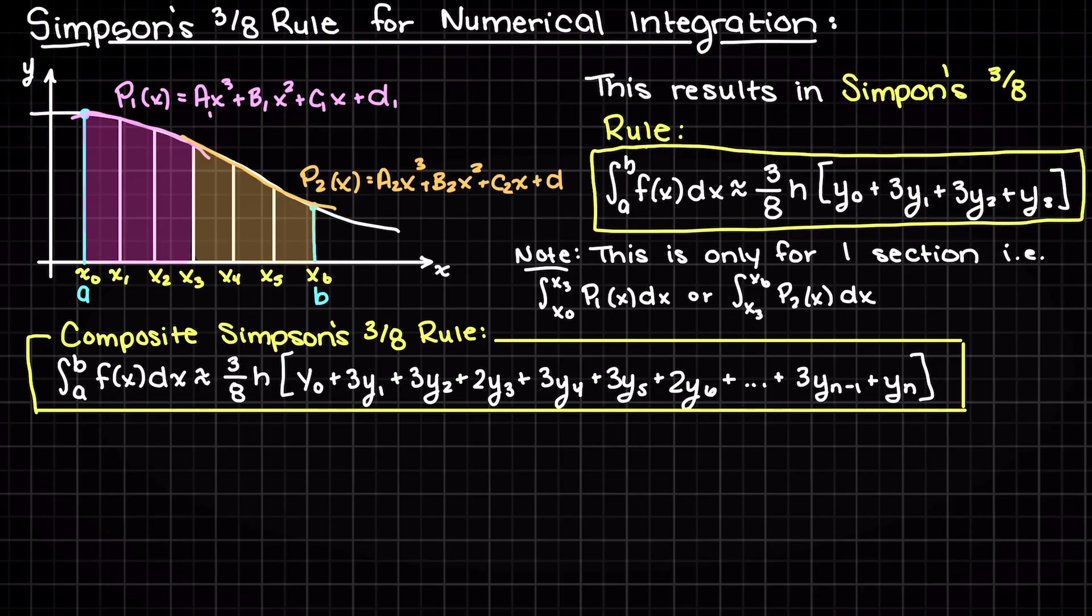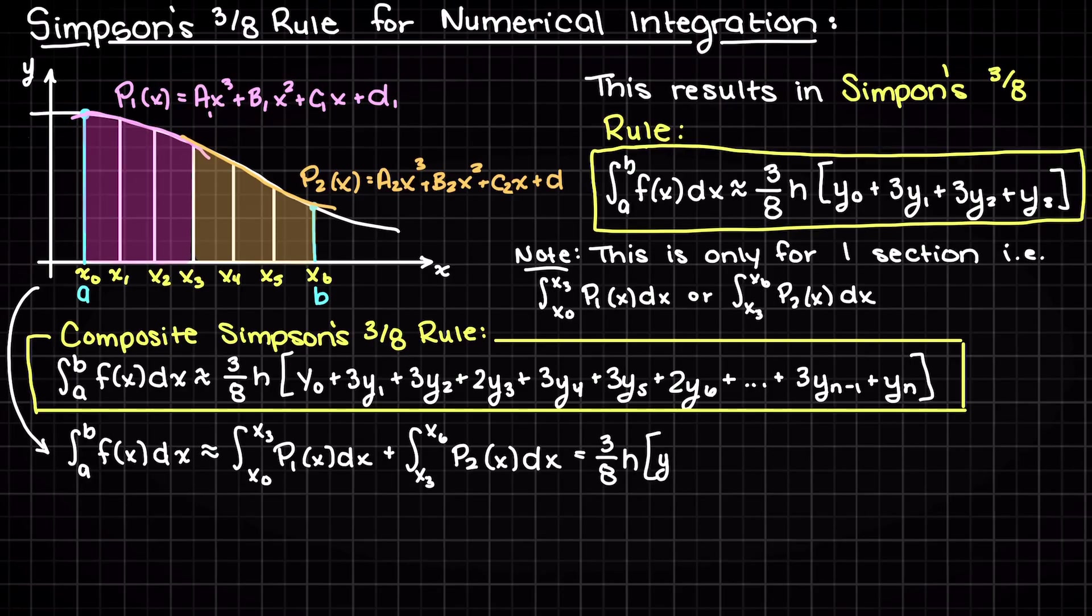Well, you may ask, where does this odd pattern come from? Well, let's imagine that we have six subsections that we are integrating across to approximate a definite integral of a general function, say f of x, which mathematically will look like this. Also, recall that we can add integrals in the following way.